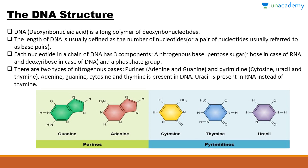Coming to the structure of DNA: its full form is deoxyribonucleic acid. It is a long polymer of deoxyribonucleotides. The length of DNA is defined by the number of nucleotides — the more the nucleotides, the longer the DNA. Each nucleotide in a DNA chain has three components: a nitrogenous base, a pentose sugar, and a phosphate group. The pentose sugar is ribose in RNA and deoxyribose in DNA.